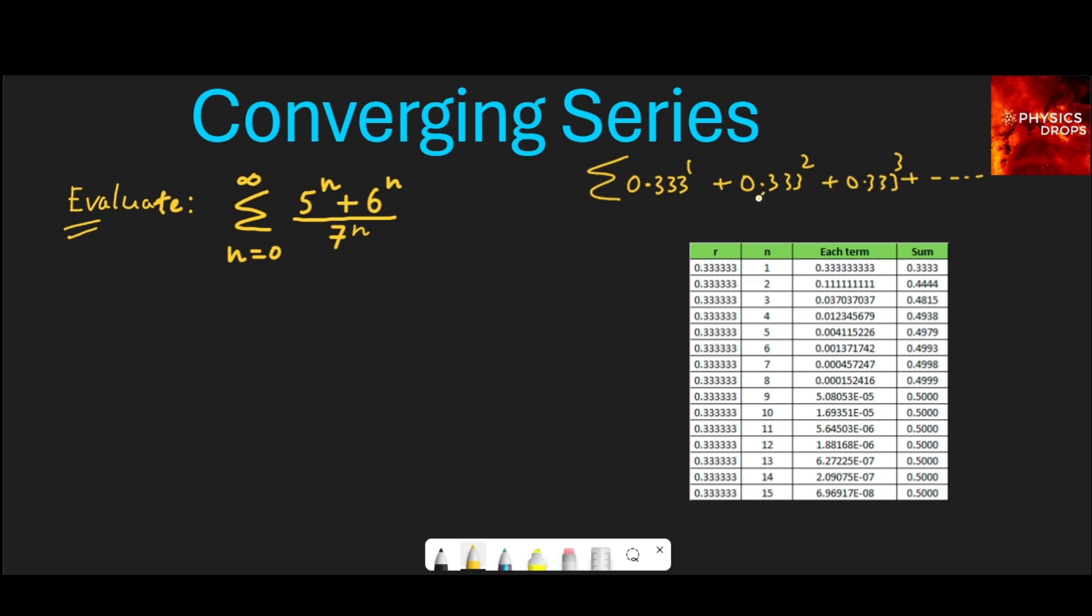If we divide the second term by the first term we get a value 0.333. If we divide the third term by the previous term, the second term, we again get 0.333. So this is the ratio denoted by r of the geometric series.